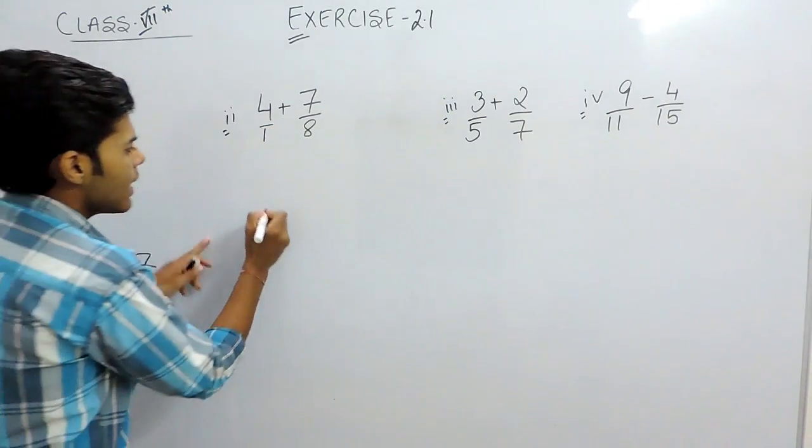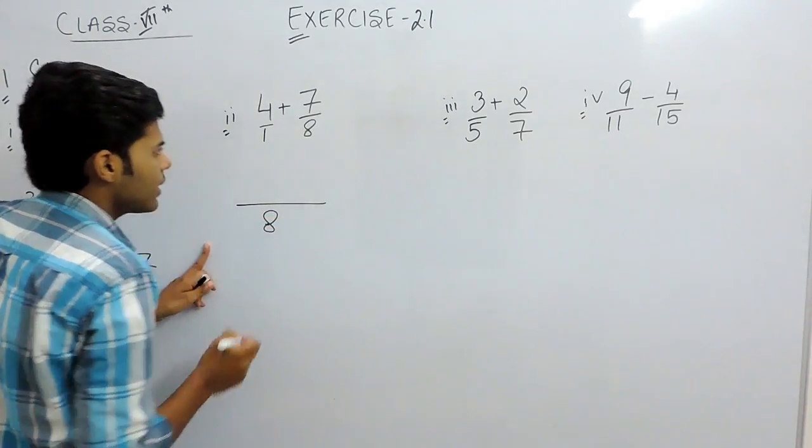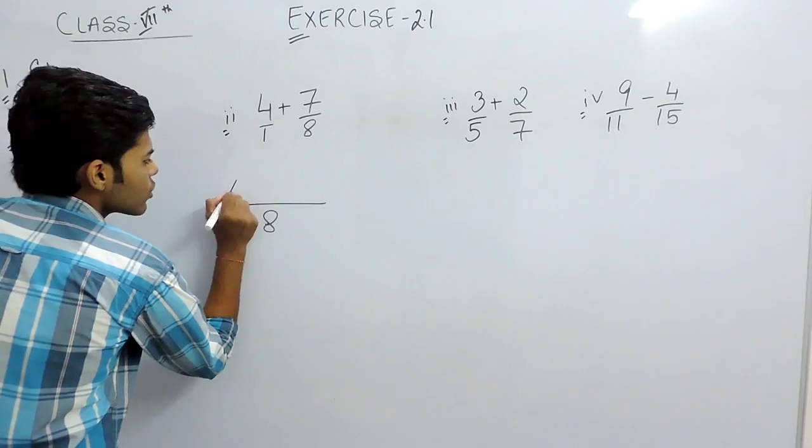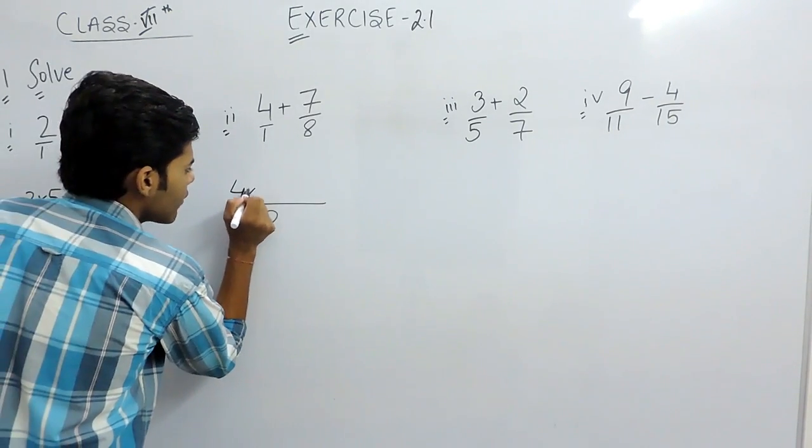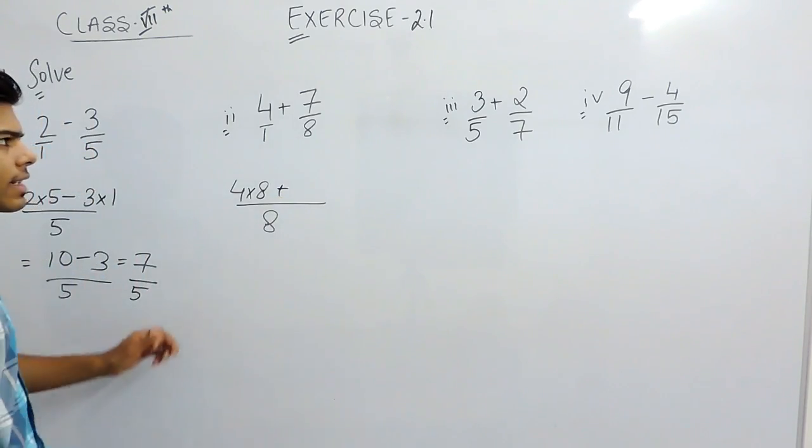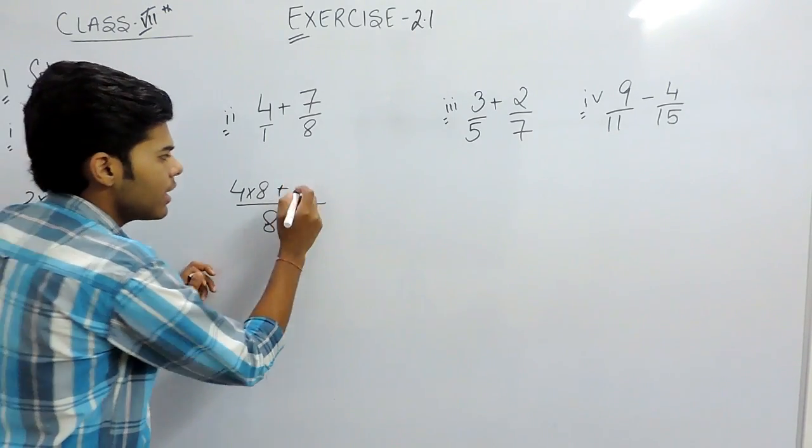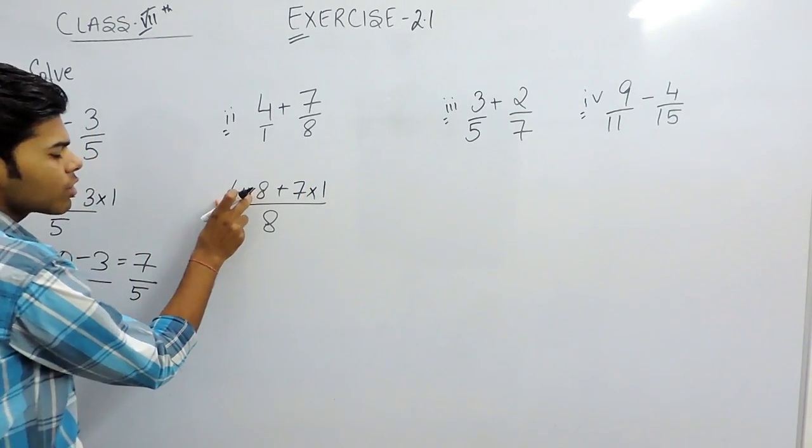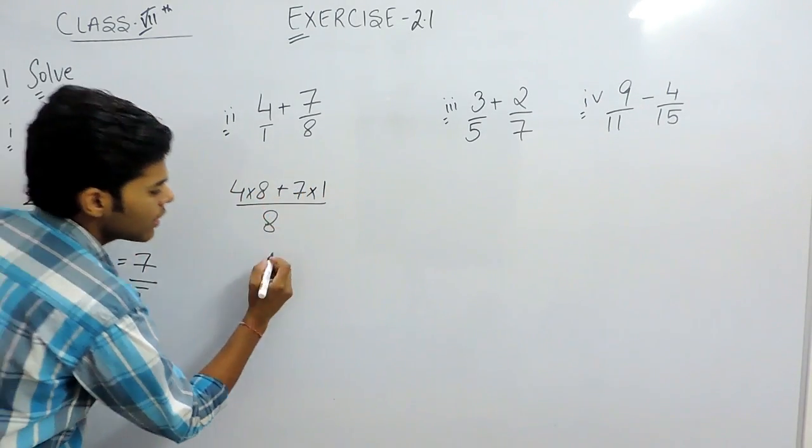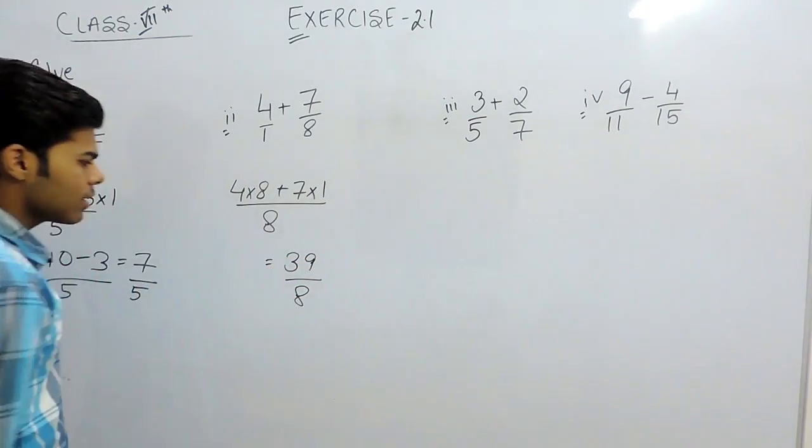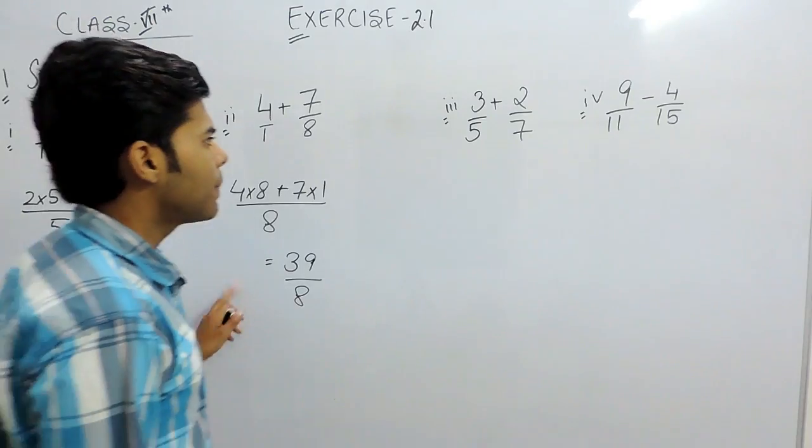Now similar for the second part, the LCM will be 8. Now 1 times 8 is 8. So first we write 4 as it is, then we will multiply it with 8. Plus sign will be copied as it is. 8, 1 times 8. So 7 will be multiplied with 1. So 8 fours are 32 and plus 7, that will be 39 divided by 8. This is the answer of part B.